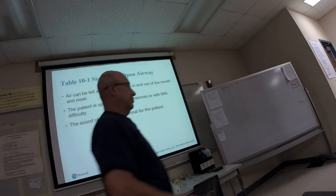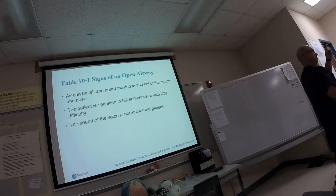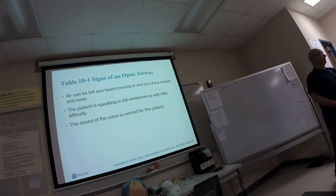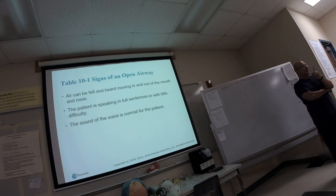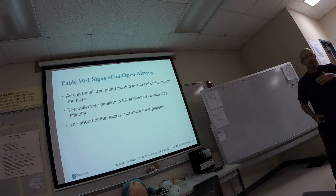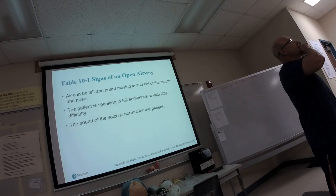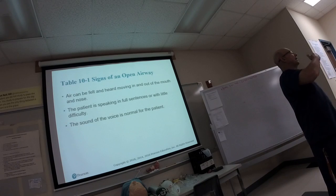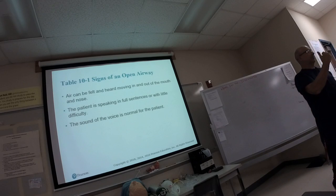Let's continue our airway review. The first thing we're going to do is open the airway. There are only two ways to open the airway: a jaw thrust for trauma patients, and a head tilt chin lift for non-traumatic patients. So we open the airway by doing a head tilt chin lift — we grab the chin and tilt the head back, which mechanically moves the tongue off the upper airway.